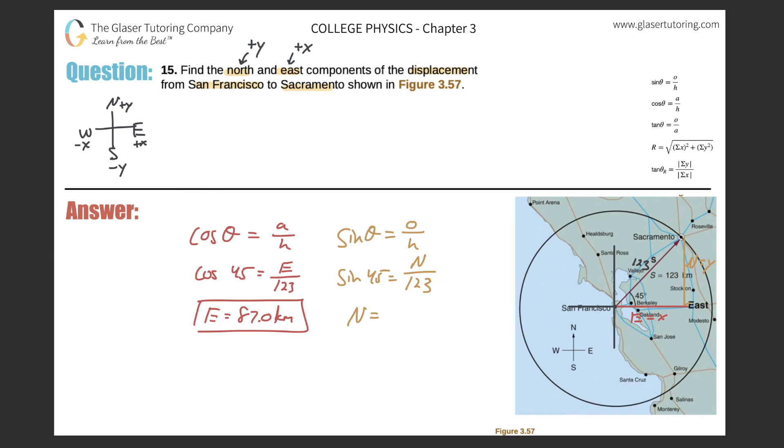And now, just plug it into the calculator, right? So we get sine of 45 times 123, and guess what? It's the same value, 87.0 kilometers. The reason why they're the same is because it is a 45 degree angle, and all 45 degree angles, the components x and y will always be equal.